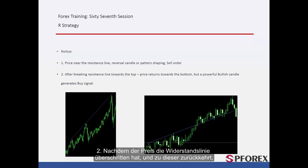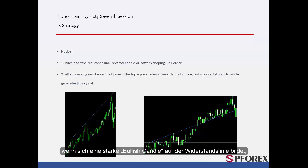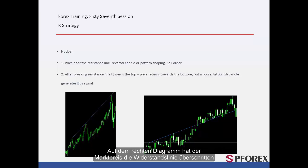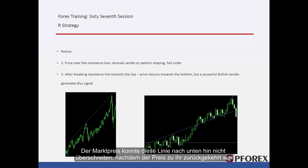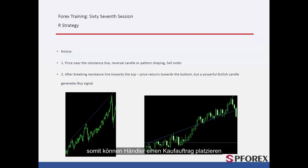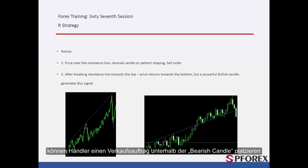Notification 2: After price passes the resistance line and returns towards it. Notification 3: If a powerful bullish candle forms on the resistance line, then a reliable buy signal will be generated. On the right graph, market price has passed the resistance line and could not pass it towards the bottom after returning. A piercing line or engulfing candle formed on this resistance line, so a trader could place a buy order. After price crossed the resistance line towards the bottom, a trader could place a sell order lower than the bearish candle.